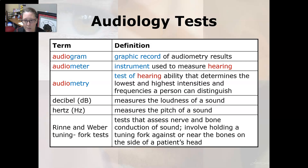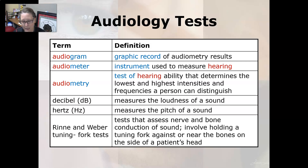A decibel is a measure of the loudness of a sound, and a hertz measures the pitch of a sound. The Rinne and Weber tuning fork tests are tests that assess nerve and bone conduction of sound, involving holding a tuning fork against or near the bones on the side of a patient's head.